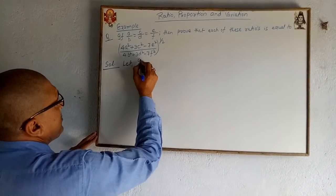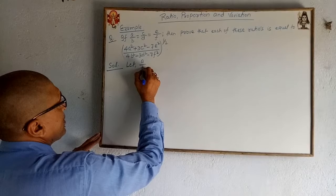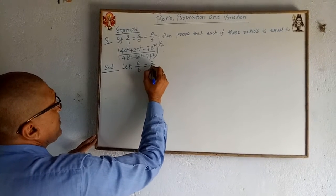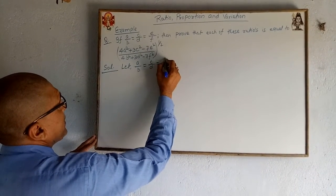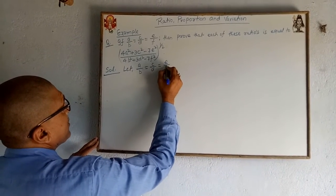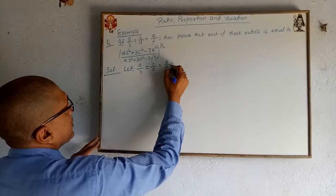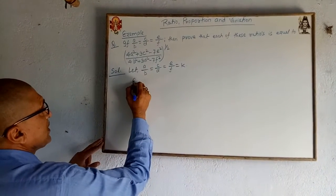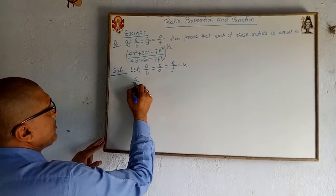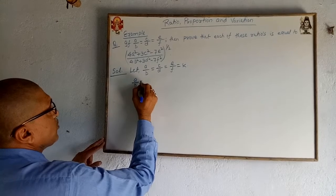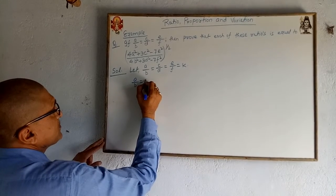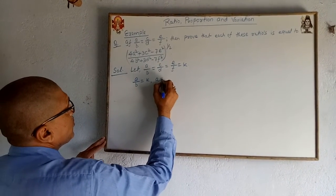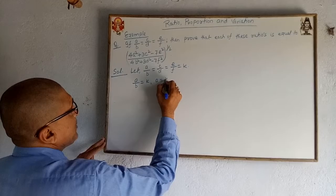Let A by B equal to C by D equal to E by F equal to K. If A by B equal to K, then A equal to KB.